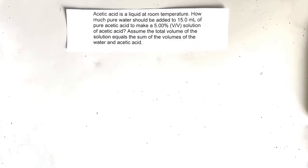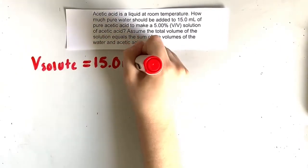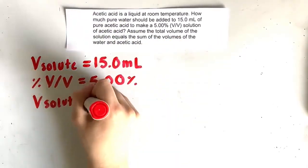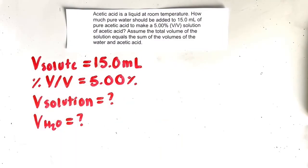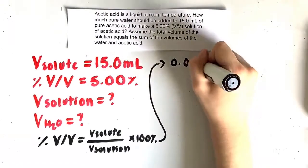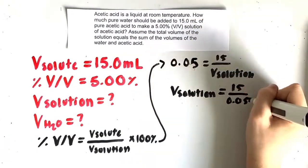Let's look at an example. Acetic acid is a liquid at room temperature. How much pure water should be added to 15 milliliters of pure acetic acid to make a 5 percent v/v solution of acetic acid? Assume the total volume of the solution equals the sum of the volumes of water and acetic acid. We have the volume of the solute, which is 15 milliliters, and the percent v/v of the solution, which is 5 percent. Rearranging the formula to find the volume of the solution gives us 300 milliliters.